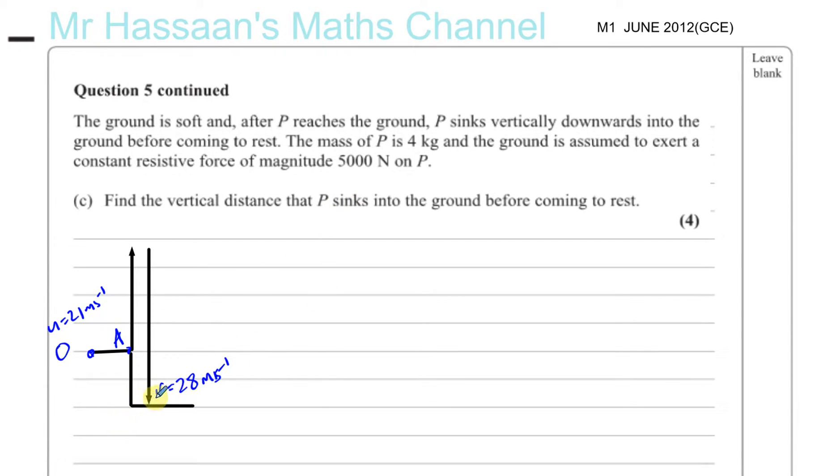Now, once it hits the ground, the situation changes. The acceleration due to gravity is not the only force acting upon it. Now there's a resistive force of the ground also acting upon it. We can think of it like a particle that's moving through the sand. You have its weight acting down and the resistive forces from the ground acting up.